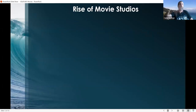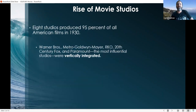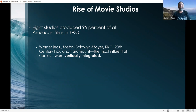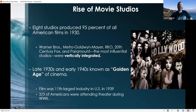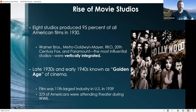Movie studios arose as Hollywood became big. In 1930, eight movie studios were producing 95% of all American films. These included Warner Brothers, Metro-Goldwyn-Mayer (MGM), RKO, 20th Century Fox, and Paramount — the most influential studios, which were vertically integrated. The late 1930s and early 1940s were known as the golden age of cinema. Film, at its peak in 1939, was the 11th largest industry in the entire United States. During World War II, two thirds of Americans were attending the theater.